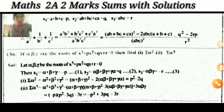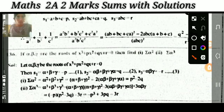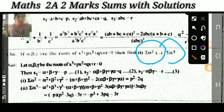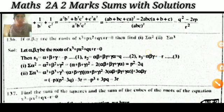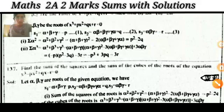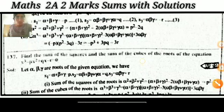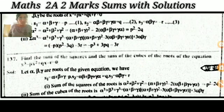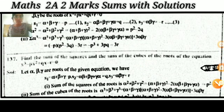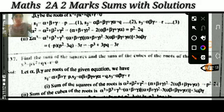If alpha, beta, gamma are the roots of the equation, then what are the values of sigma(alpha²) and sigma(alpha³)? This is also a most important question. And the next one: find the sum of the squares and the sum of the cubes of the roots of the equation.